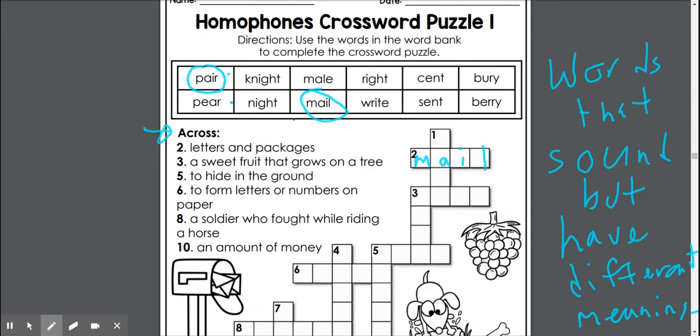Alright, here we go. Number three. A sweet fruit that grows on a tree. So this is going to be across again. Sweet fruit that grows on a tree. I'm thinking probably something along the lines of a pear. A pear tree. So it's going to go across.